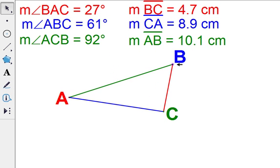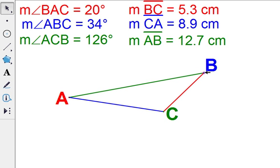Now, if I change it, maybe now it looks like this. The smallest angle now is angle A. The smallest side is segment BC. The biggest angle is angle C. The biggest side is segment AB.